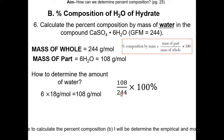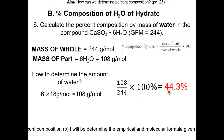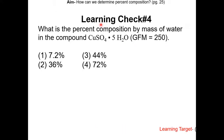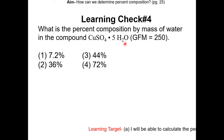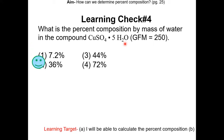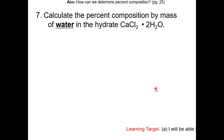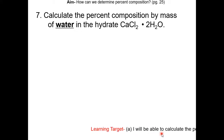We plug into the equation: 108 over 244 times 100% gives us 44.3%, and that is the percent composition of water in the hydrate. Learning check number 4: what is the percent composition by mass of water in the compound copper sulfate pentahydrate? Pause the video and resume once completed. The answer is 36%.